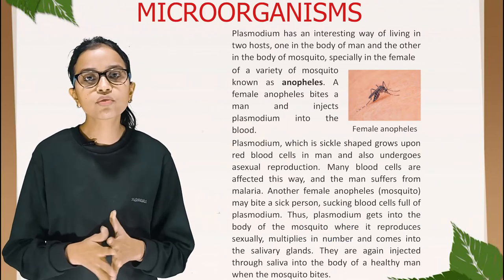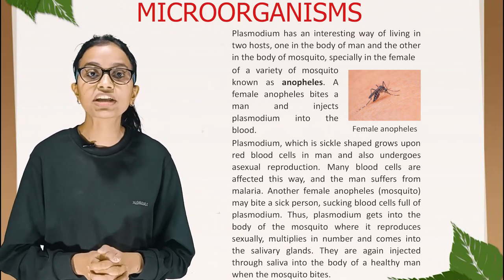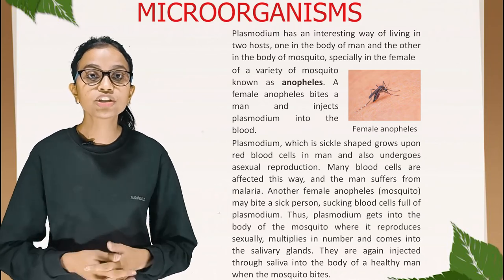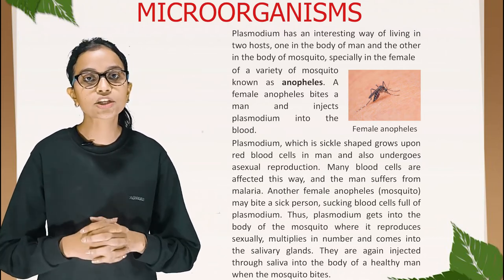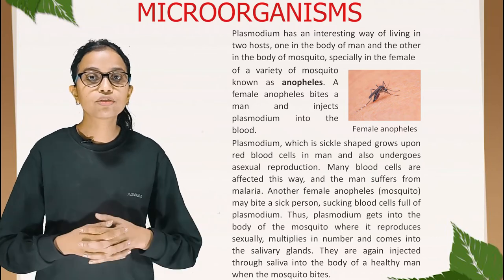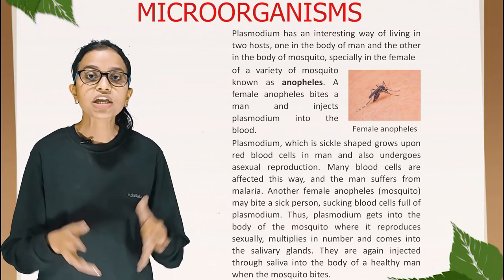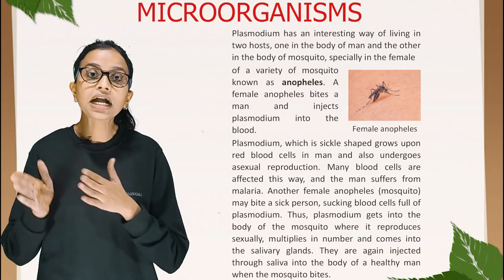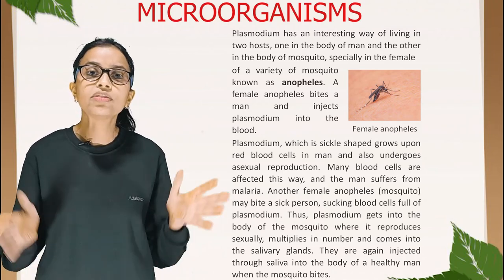Plasmodium has an interesting way of living in two hosts — one in the body of humans and the other in the body of female Anopheles mosquitoes. A female Anopheles bites a human and injects Plasmodium into the blood. Plasmodium, which is sickle-shaped, grows upon red blood cells and undergoes asexual reproduction, causing malaria. Another female Anopheles mosquito may bite the sick person, and Plasmodium gets into the mosquito's body where it reproduces sexually, multiplies, and enters the salivary glands, to be injected again into a healthy person.